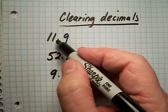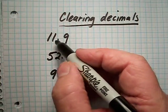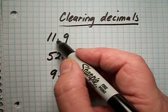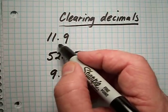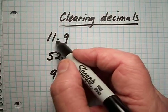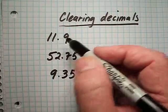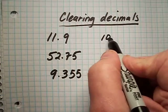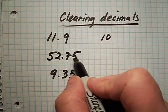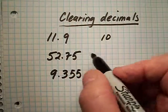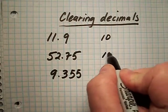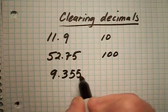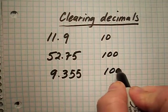It's important to know what the digit means when you're counting away from your decimal. So if it's one digit over, it's tenths — you can write ten. Two digits over, it's hundredths, so write one hundred. Three digits over from your decimal is thousandths.